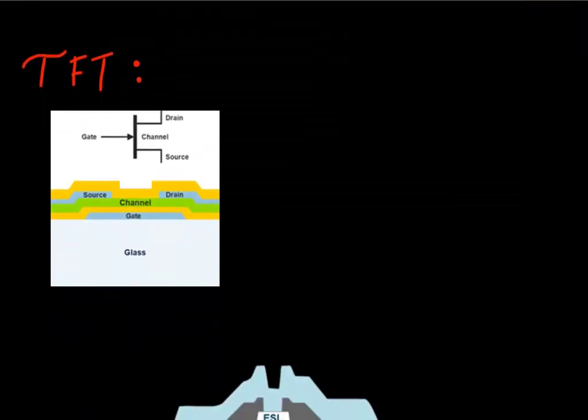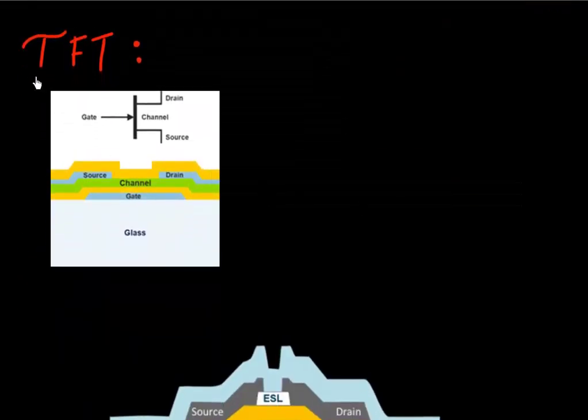So looking further, each of these individual TFTs looks something like this. What you have is the equivalent of a channel last or gate first process which is used over here.